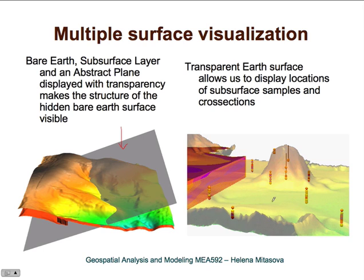Here is another example where we have a mound — this data is from South America. There are soil samples that were taken below the surface, and you can use transparency to find where the surface is and then look at the samples and their color to determine what kind of soil was found there. So that's another use of transparency.